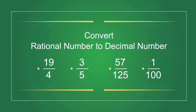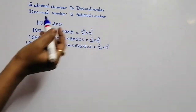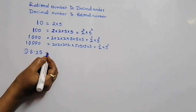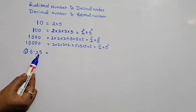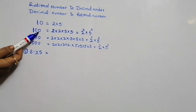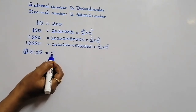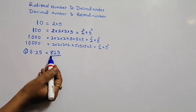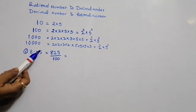Now I am going to explain how to convert a decimal number into its rational number. Let us take 8.25. In order to convert it, we check how many digits are there after the decimal point — there are 2 digits. So we take a number with 2 zeros, which is 100. We remove the decimal point, write 825 in the numerator and 100 in the denominator. So 8.25 as a rational number is 825 by 100.